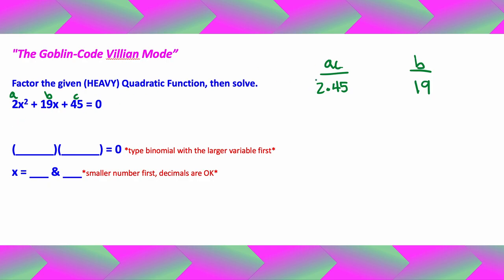So the A value times the C value is going to give me a 90. So I got to find the numbers that multiply to 90 to make 19. Luckily my mental math game is not too bad. I think 9 times 10 is going to give me a 90 and 9 plus 10 is going to give me a 19.